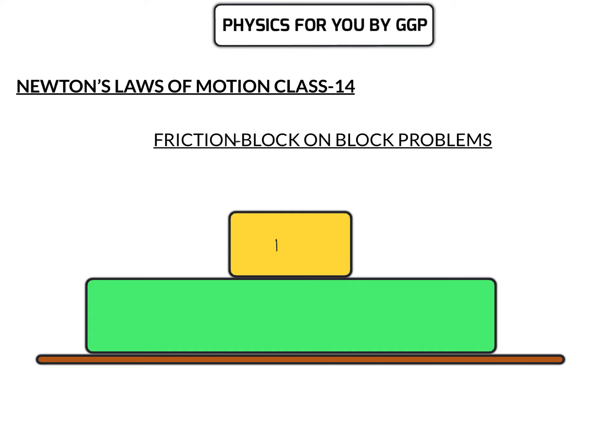If there is a block of mass m1 kept on another block of mass m2, which is kept on a surface — that surface may be smooth or it may have friction — and if a force F is exerted on block m1, we need to find the acceleration of m1, the acceleration of m2, the frictional force between m1 and m2, and the frictional force between m2 and the surface.